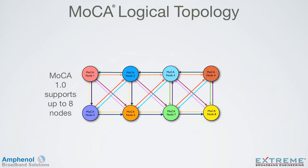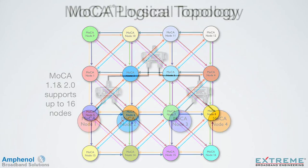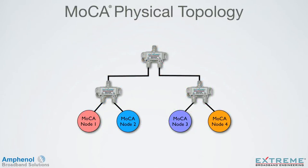MOCA 1.0 supports up to 8 nodes, and MOCA 1.1 and 2.0 will support up to 16 MOCA nodes. So if we look back at the physical topology, if MOCA node 1 needs to talk to node 2, or 3 to 4, it's taking a different path from standard cable TV signals — here it's taking a port-to-port isolation path. If node 1 needs to talk to node 4, or 2 to 3, it takes an insertion loss path, a port-to-port isolation path, and another insertion loss path. For more information on MOCA signals through passive devices, see our video on MOCA and passive characteristics.